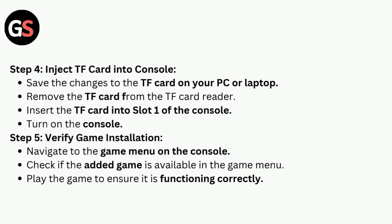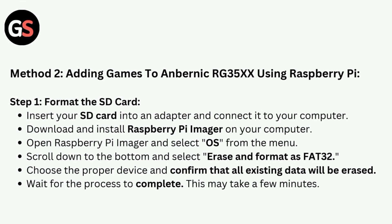Step 5: Verify game installation. Navigate to the game menu on the console and check if the added game is available. Play the game to ensure it is functioning correctly. This concludes Method 1. Method 2 covers adding games to the Anbernic RG35XX using Raspberry Pi.